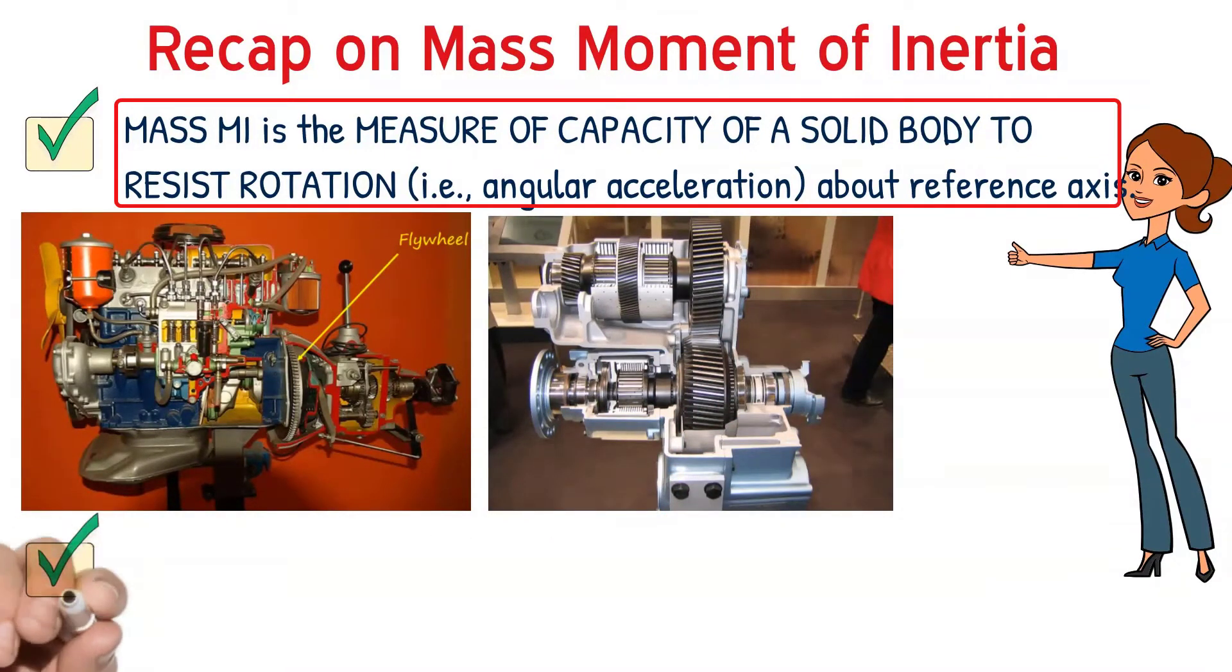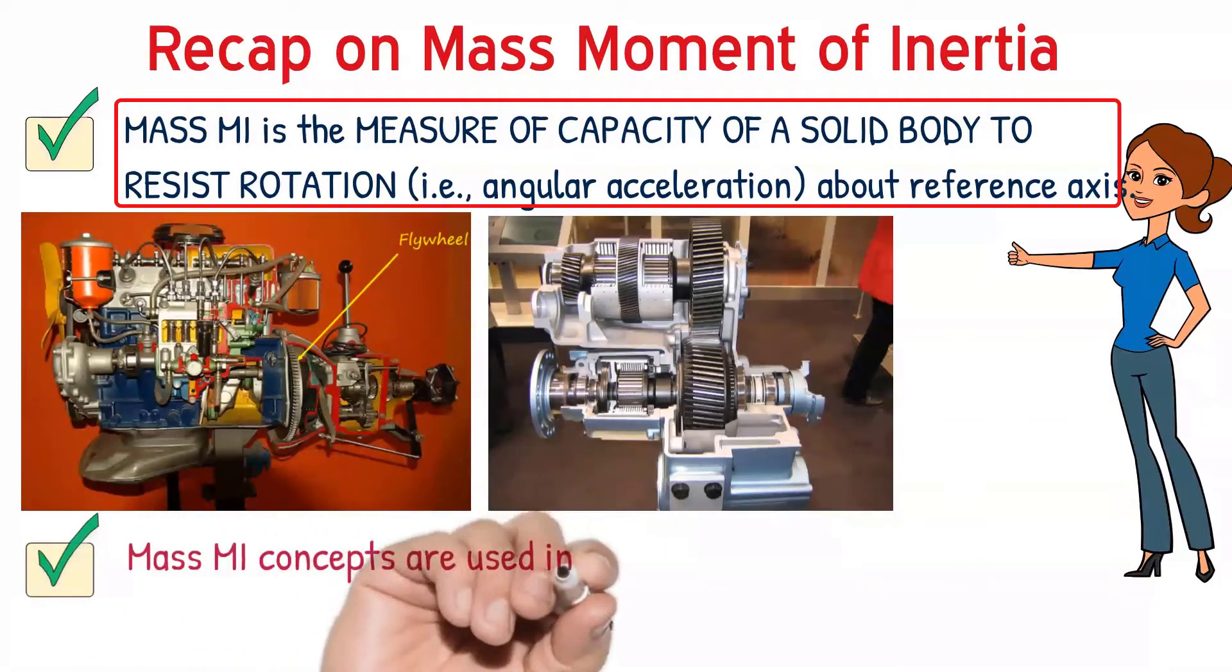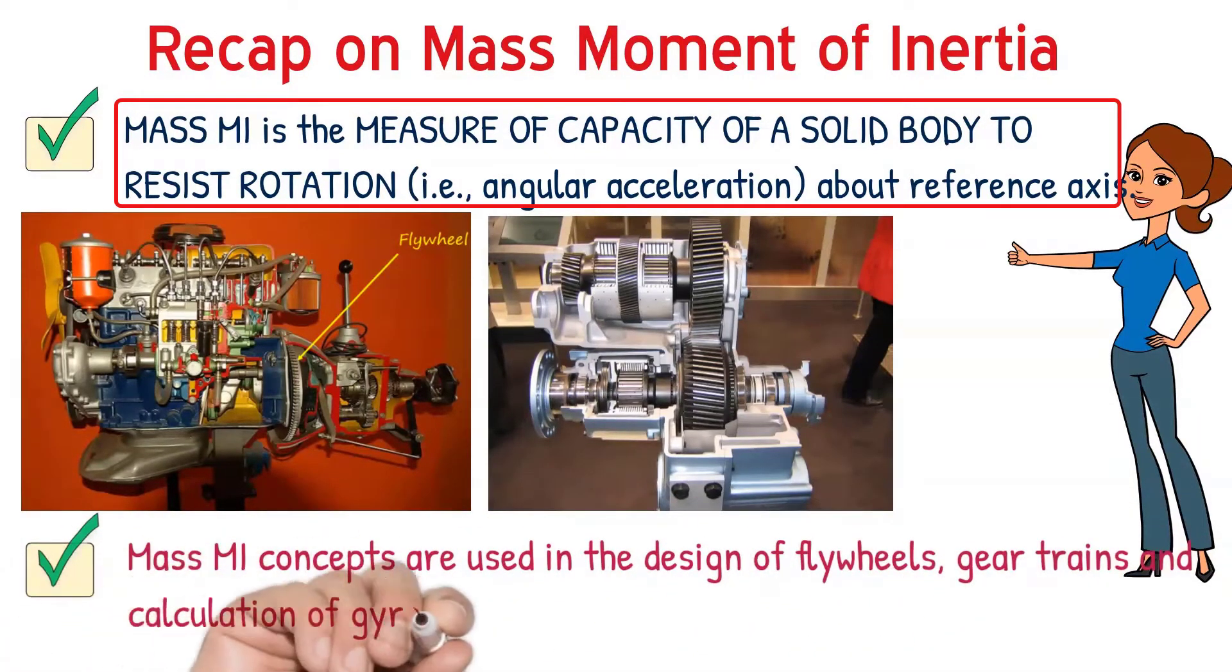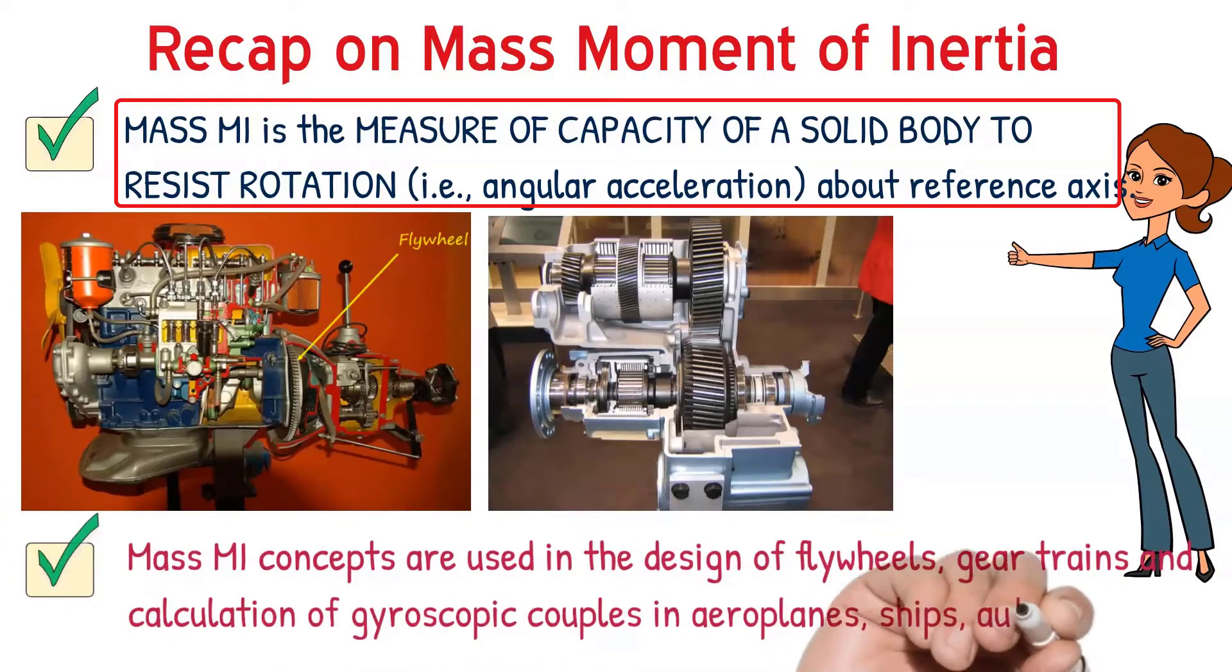As you could see here, the flywheels, gear trains, and gyroscopes that are being used in aeroplanes, ships, and automobiles, they all use the concept of mass moment of inertia for their designs.